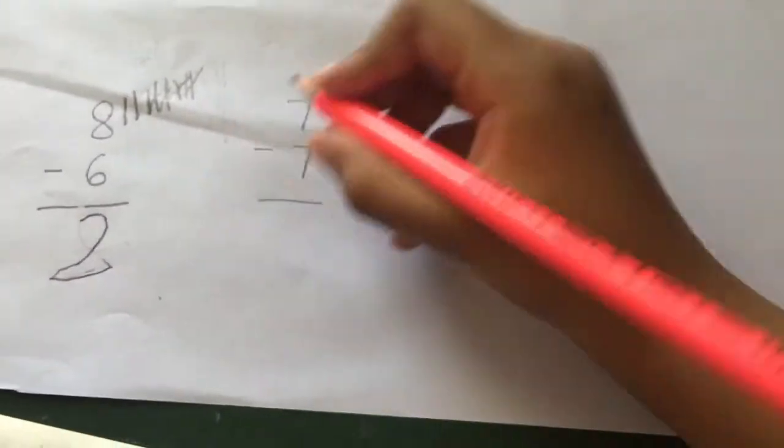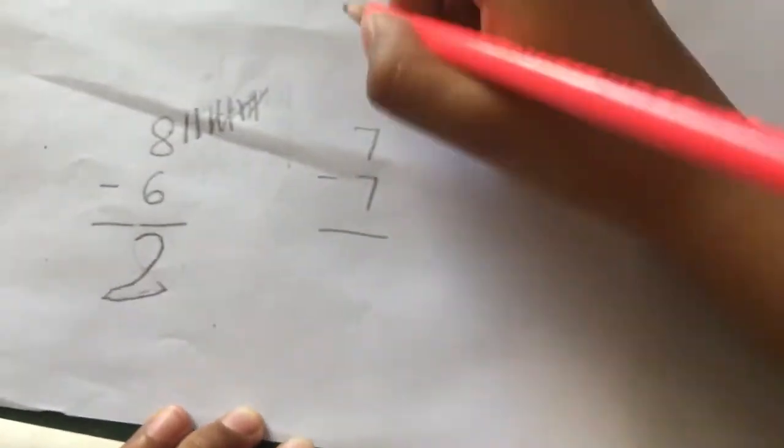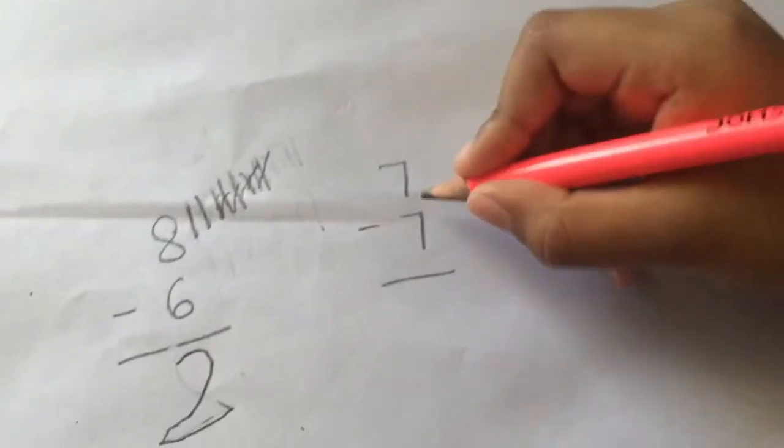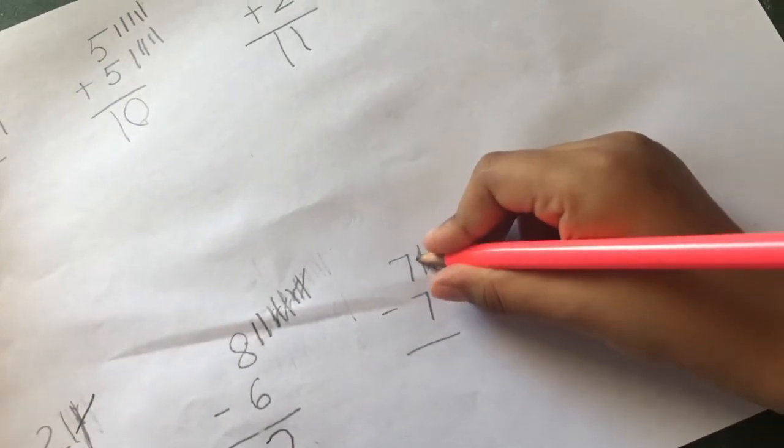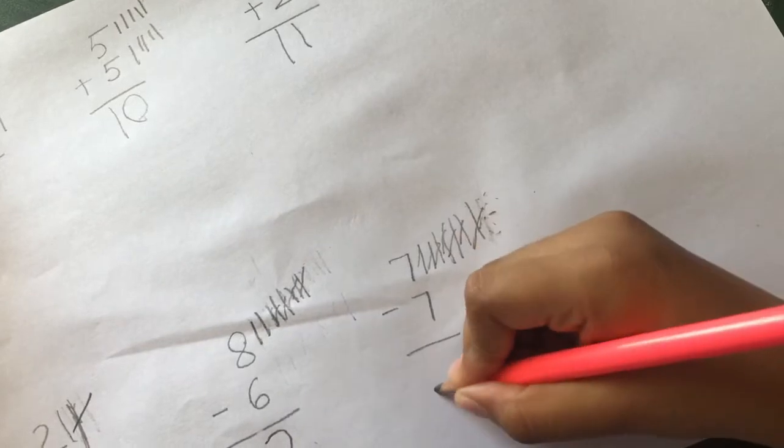Now we write 7 plus 7. 7 minus. 7 minus. 5, 6, 7. So it's 0. The answer is 0.